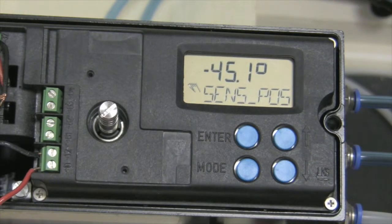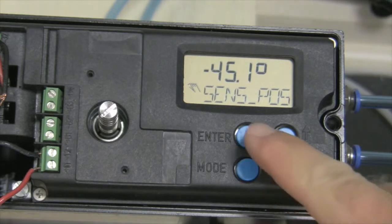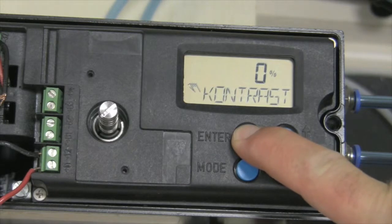To calibrate this positioner, we know that it's on a rotary actuator. So what we will do is press and hold the enter button. We will keep holding it until adjust rot appears.